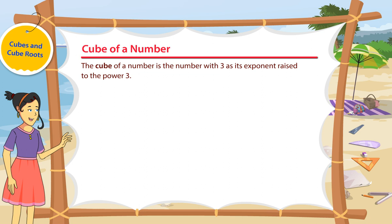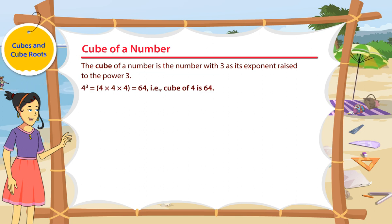For example, 4 cube is equal to 4 multiplied 3 times, that is, 4 × 4 × 4. So the cube of 4 is 64.